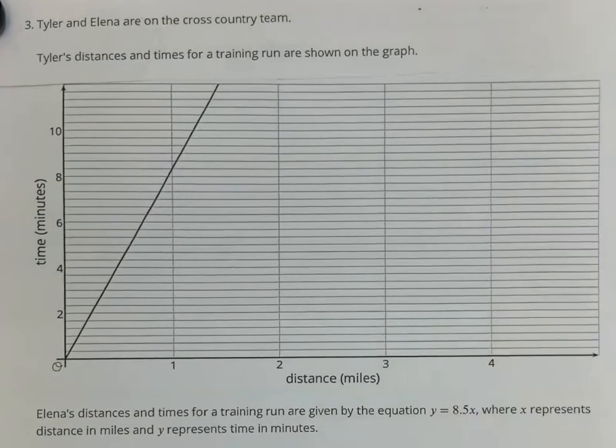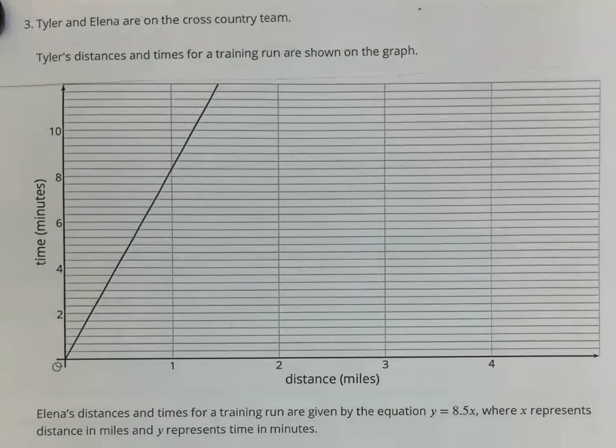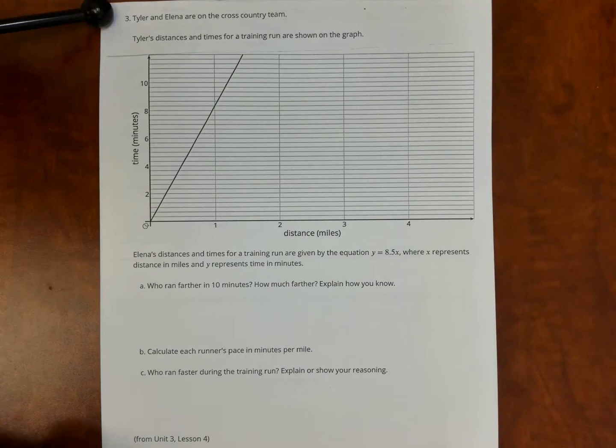Elena's distances and times for a training run are given by the equation y equals 8.5x, where x represents the distance in miles and y represents the time in minutes. Question A, who ran farther in 10 minutes? How much farther? Explain how you know. B, calculate each runner's pace in minutes per mile. And then part C, who ran faster during the training run? Explain or show your reasoning.